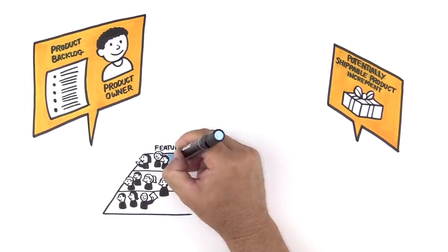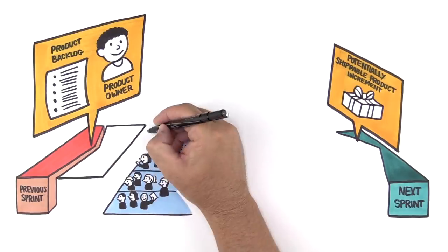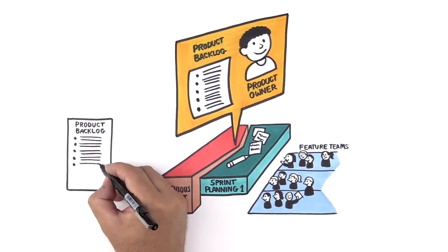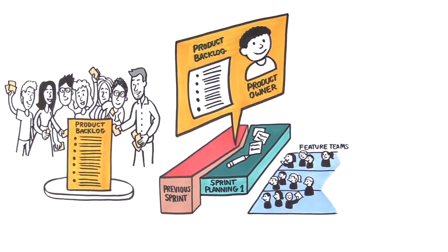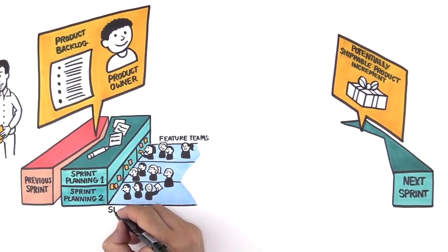Development is iterative and incremental. Each sprint starts with Sprint Planning One, a short shared event where each team selects features from the top of the product backlog that they will implement during the sprint. That's followed by Sprint Planning Two, where the teams discuss their strategies for developing their features during the sprint.